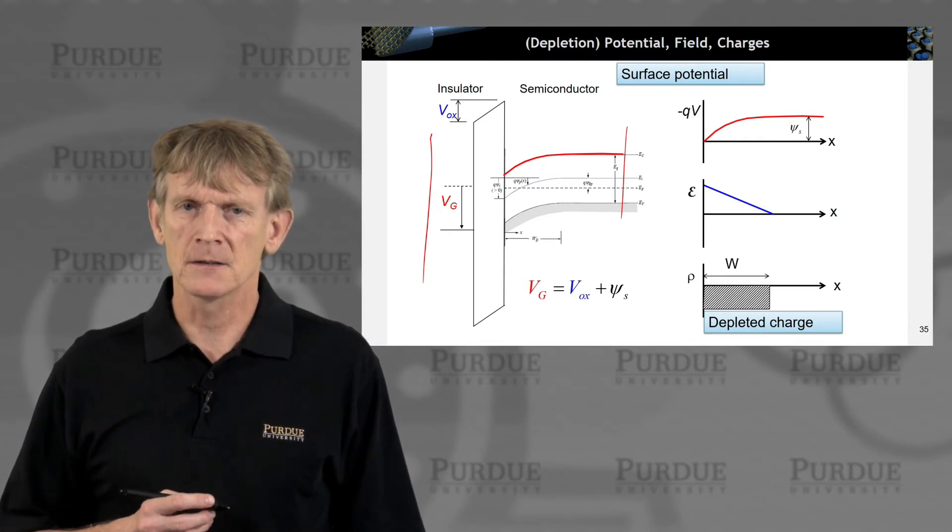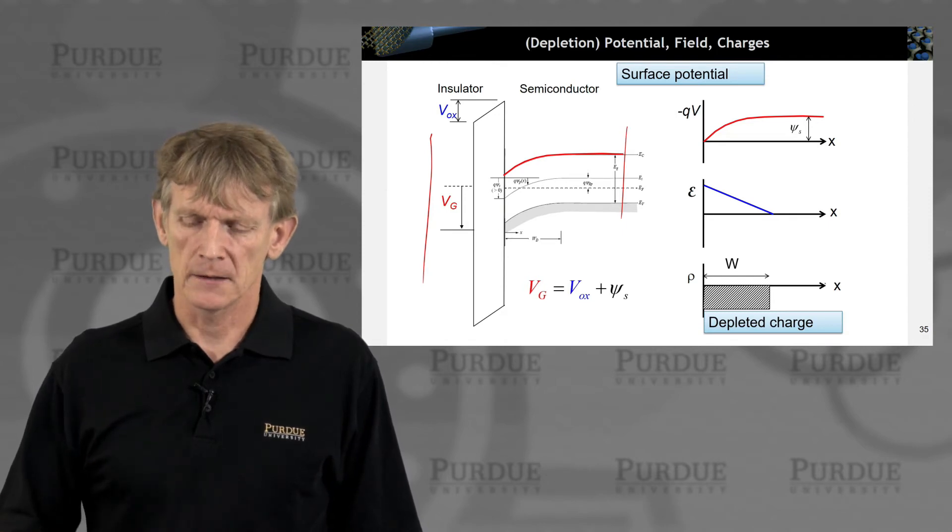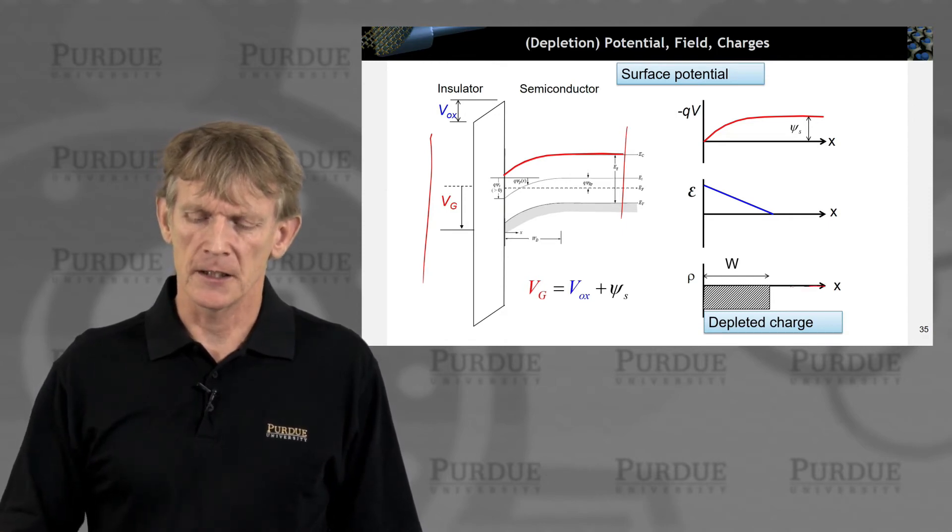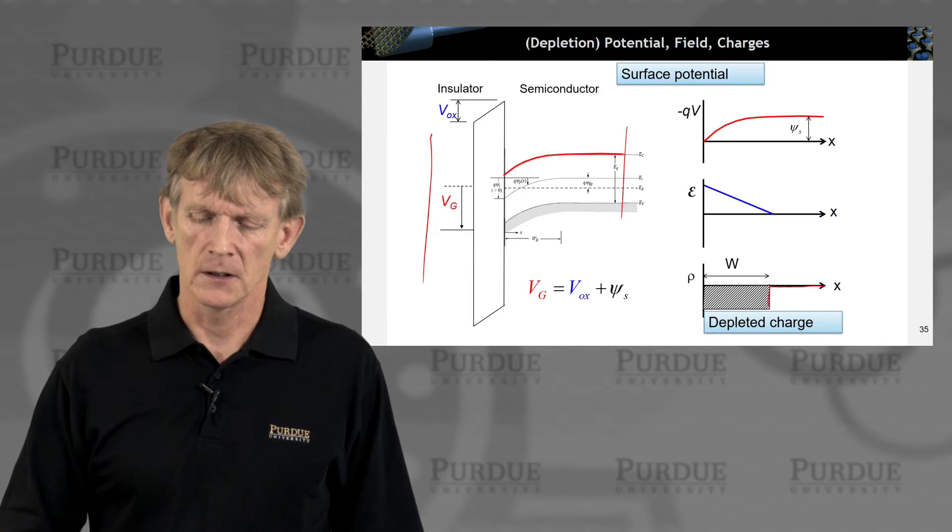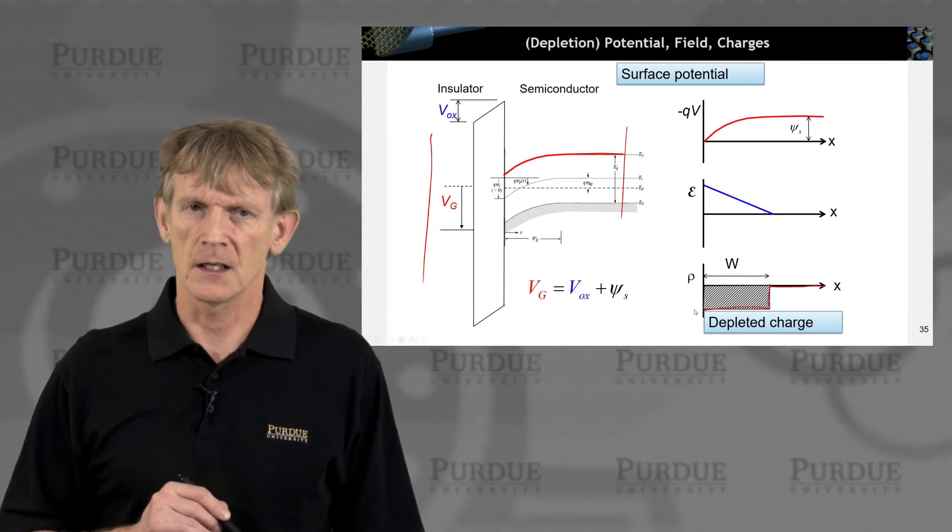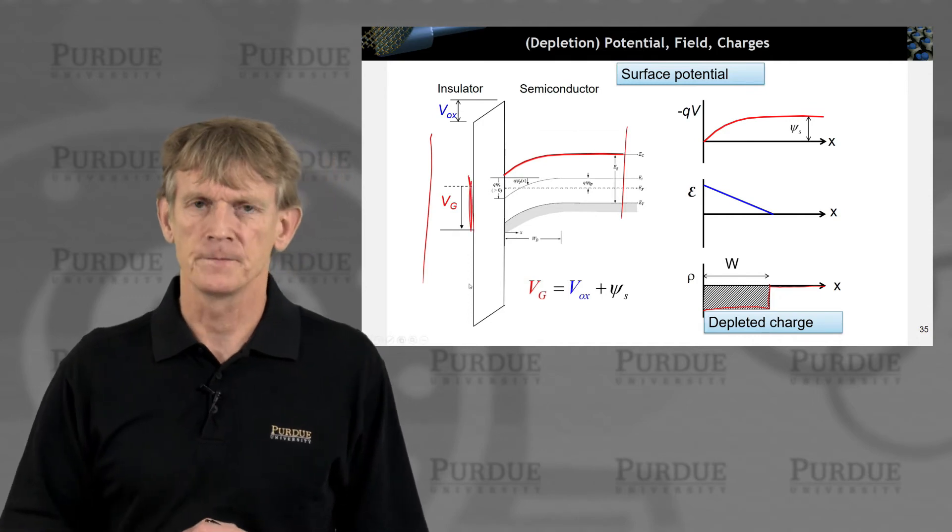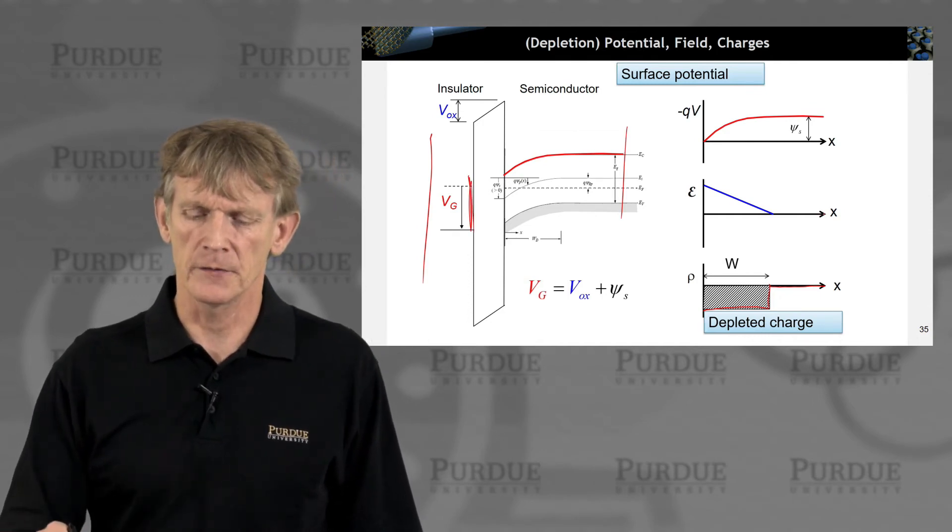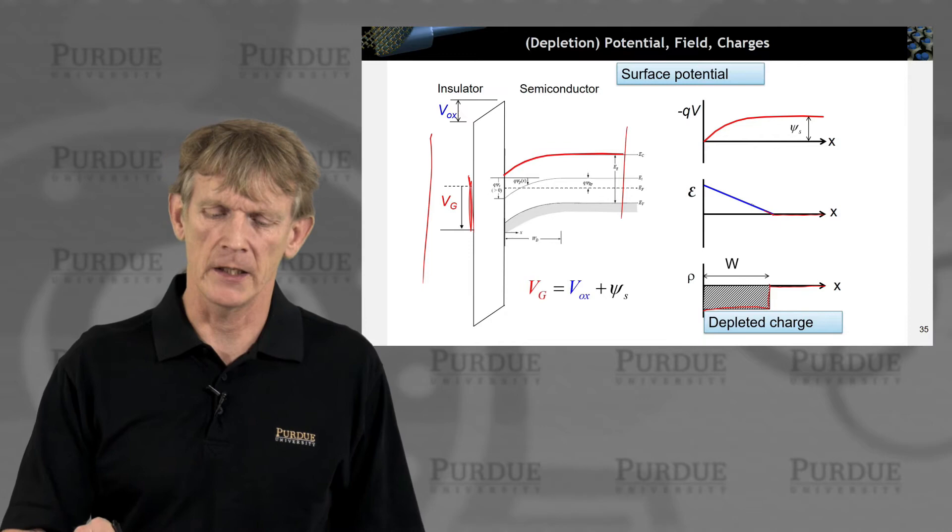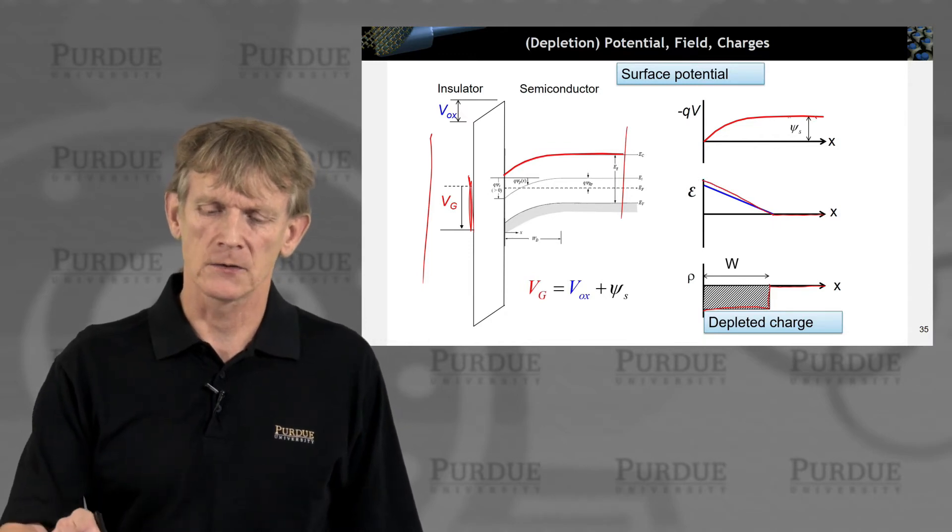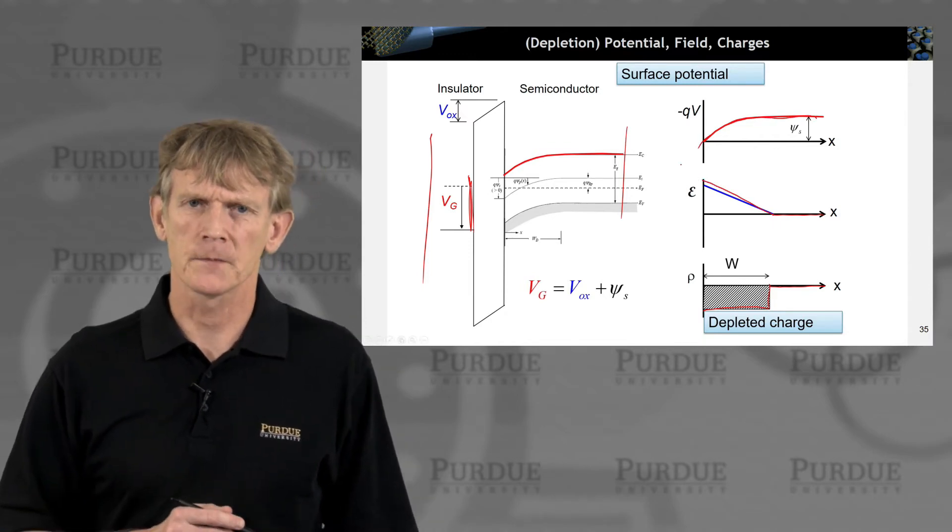So that means that if we start from the right, we have zero free charge. At some point, we encounter the acceptor charge in this case, and that needs to be balanced by some other charge that sits here. So that's why the electric field coming from this direction rises up, or the electrostatic potential goes down.